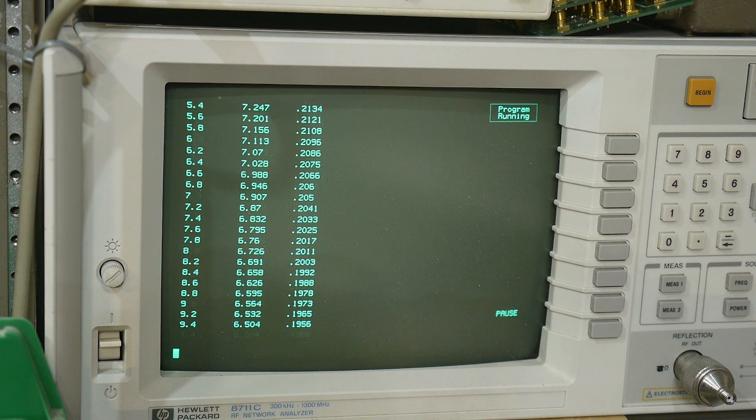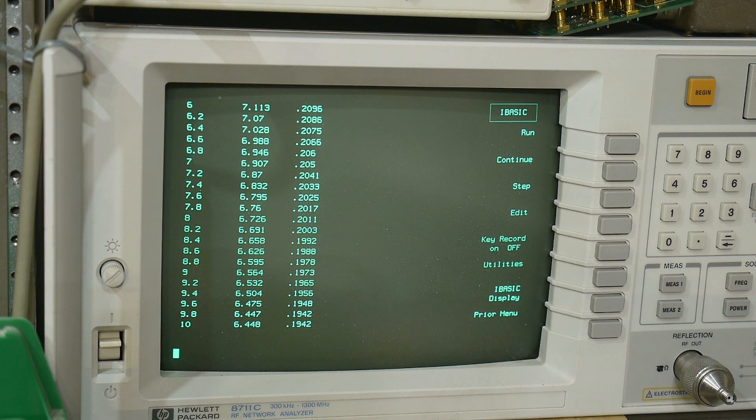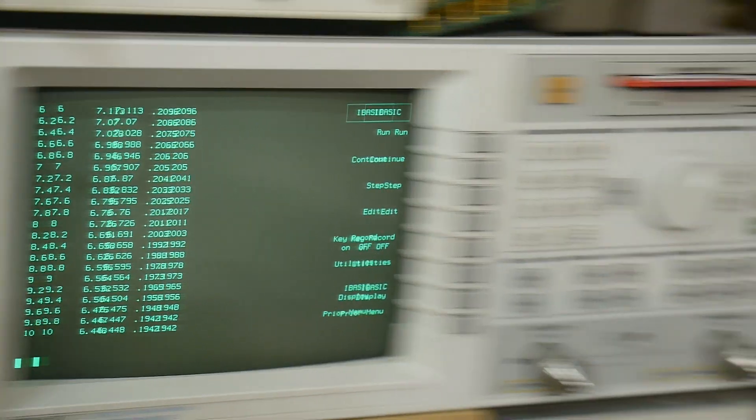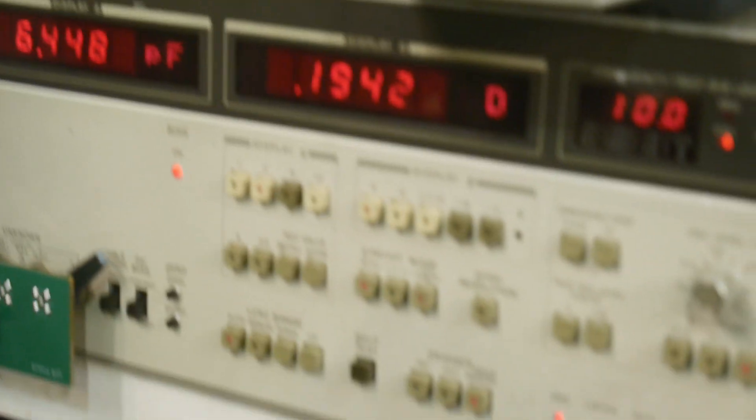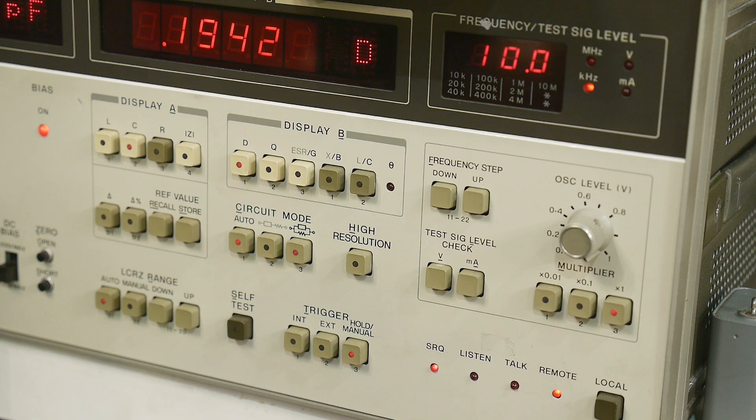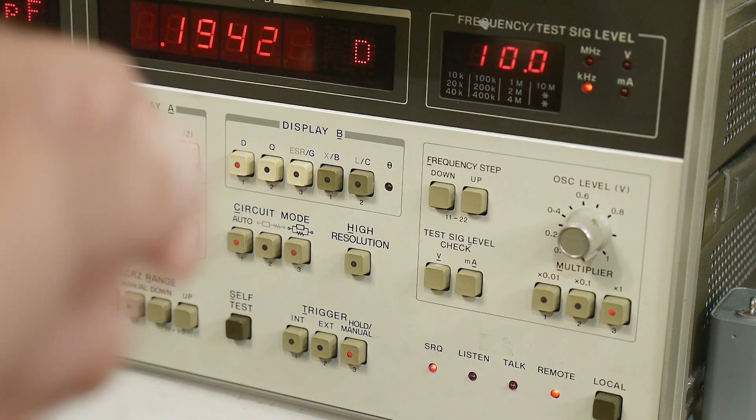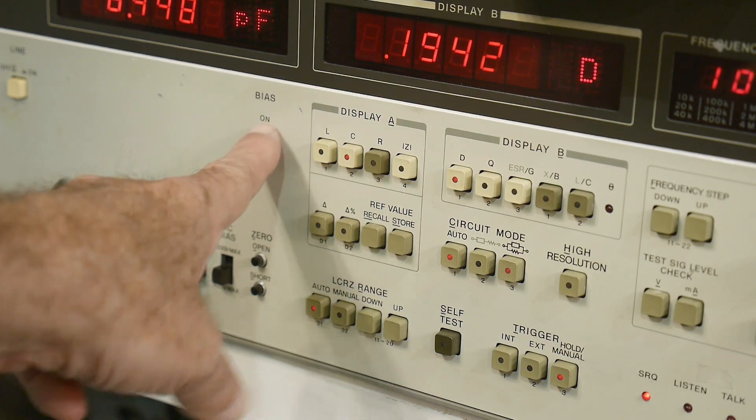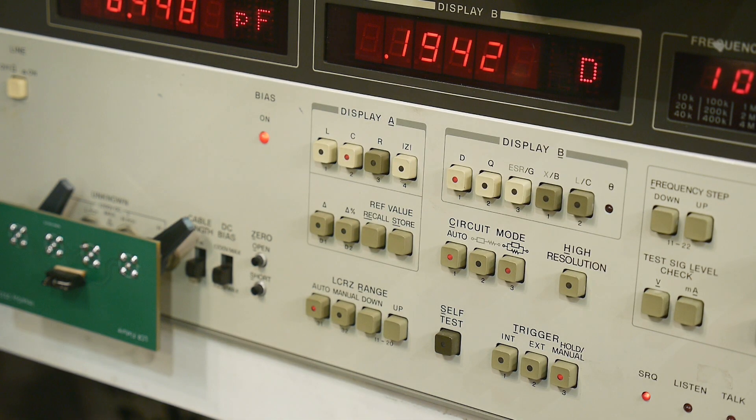And, yeah, so it's controlling the other instrument just fine. When you talk to the instrument, you get a remote light and a service request light on. When you flip the switch in the back, you get the DC bias on, so you know you're applying DC bias.